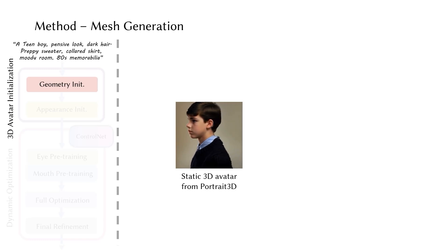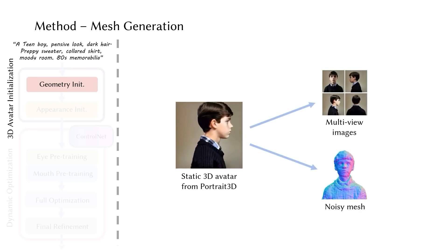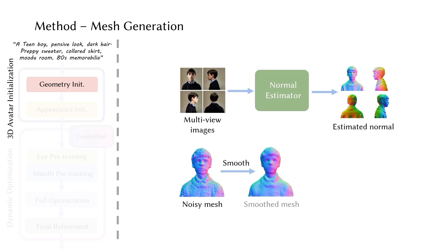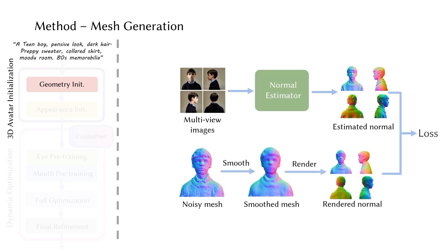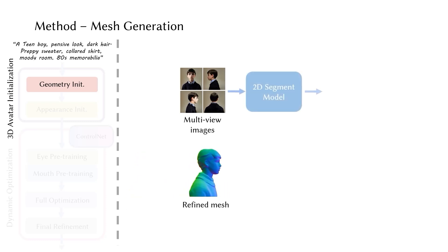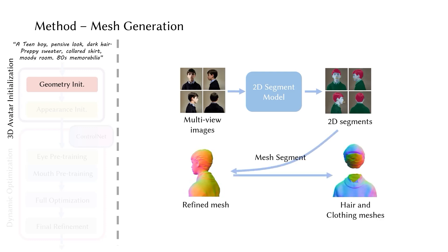From the multi-view images and noisy raw mesh obtained from the Portrait3D predictions, we use an off-the-shelf normal estimator to extract normal maps from the multi-view images. The noisy raw mesh is smoothed and then optimized using the estimated normal maps. The refined mesh offers enhanced detail and reduced noise. Next, we extract 2D segmentation maps from the multi-view images and use them to segment the refined mesh, obtaining separate meshes for hair and clothing.